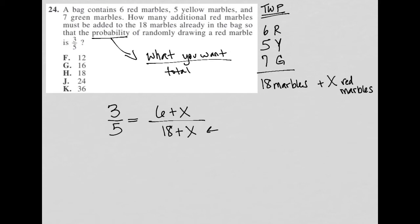This represents the total after adding the red marbles. This represents the total number of red marbles after adding the additional ones. But I know that somehow this fraction needs to reduce to be three fifths. That's what the question told me. This is technically the translation part of this question.